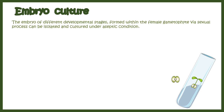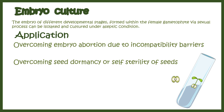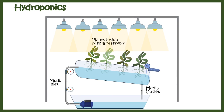Embryo culture involves isolating embryos of different developmental stages formed within the female gametophyte via sexual processes, and culturing them as a whole under aseptic conditions. Advantages include overcoming embryo abortion due to incompatibility barriers, overcoming seed dormancy or self-sterility of seeds, and shortening of the breeding cycle.